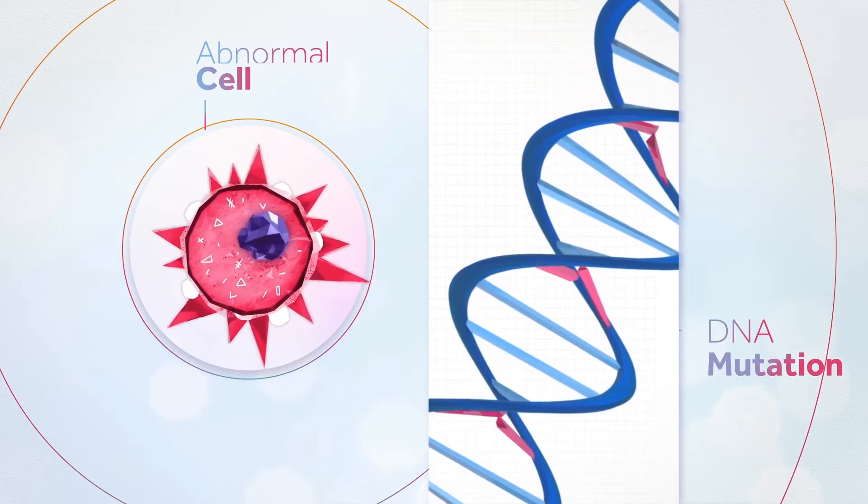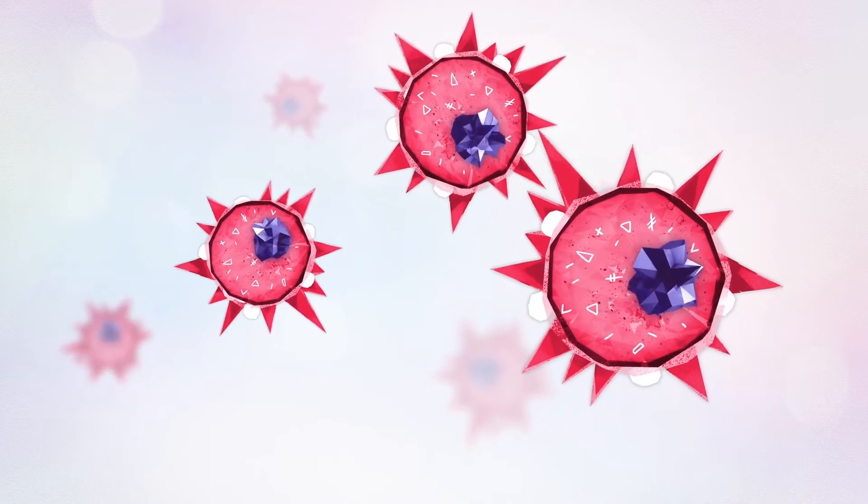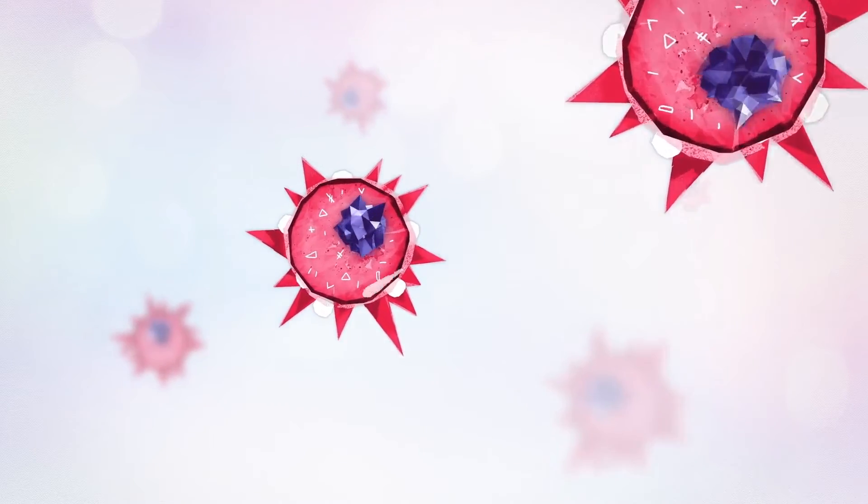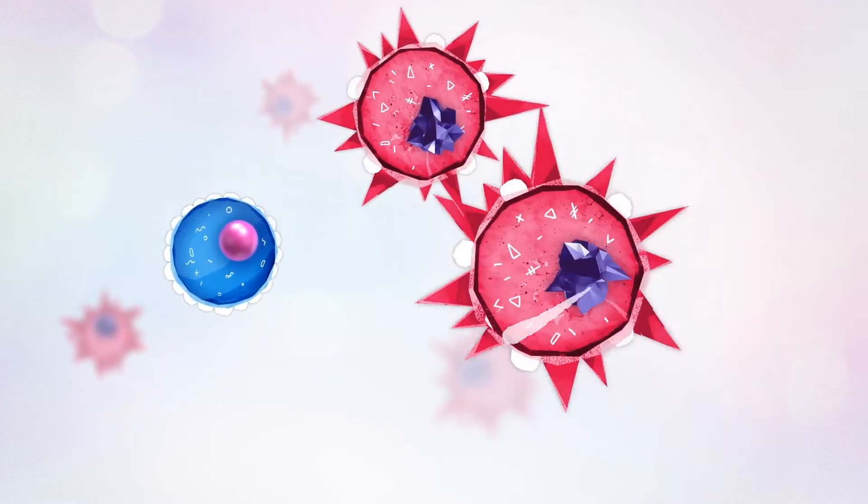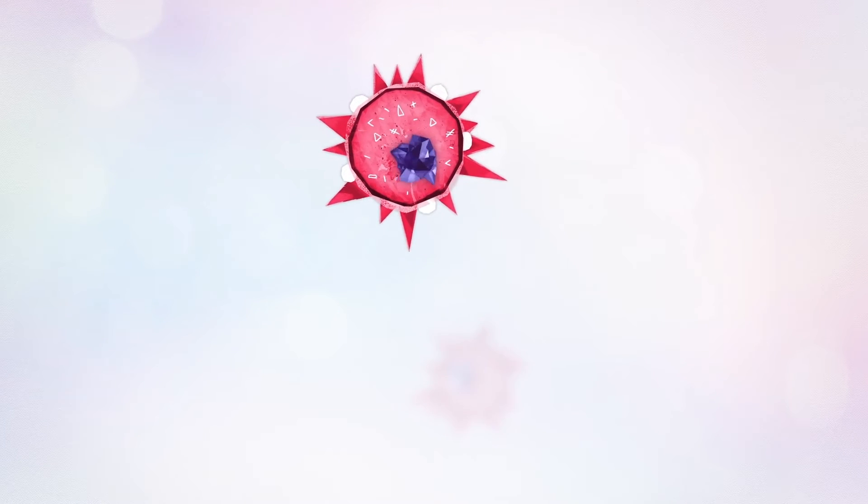At this stage, the cell is becoming abnormal. In a large majority of instances, the cell itself recognizes those mutations, repairs them, or induces its destruction by programmed cell death.